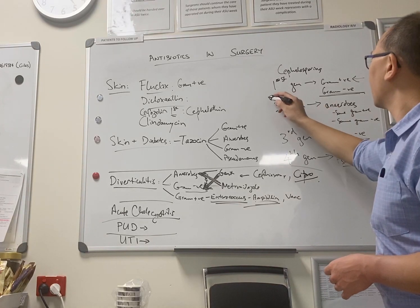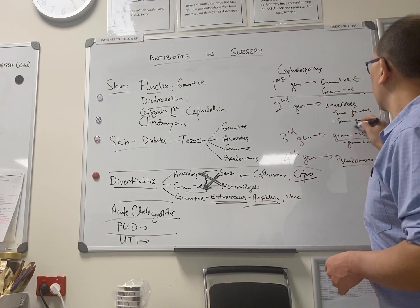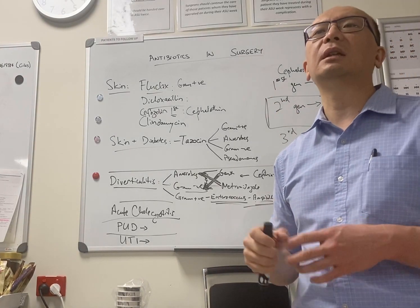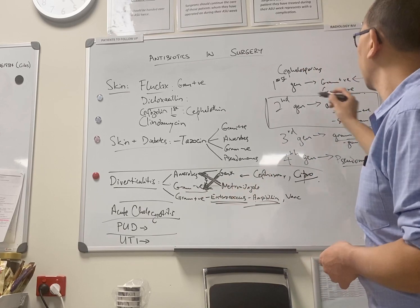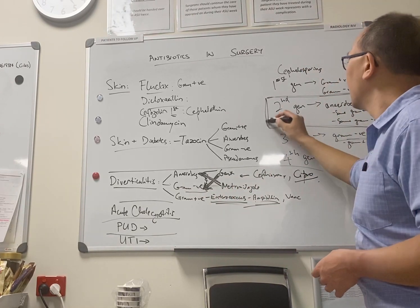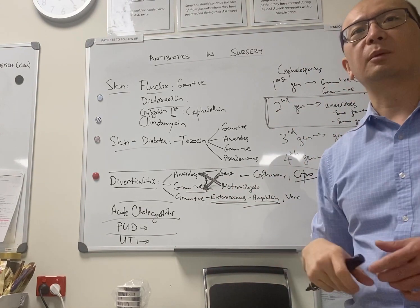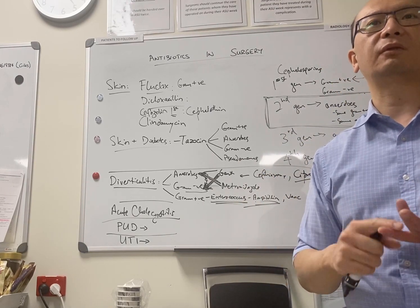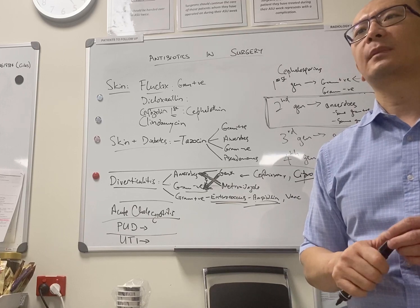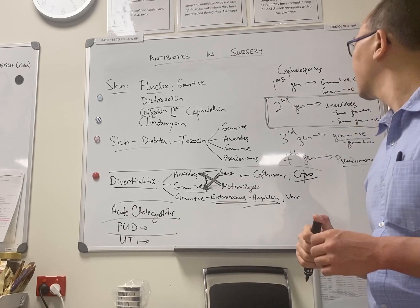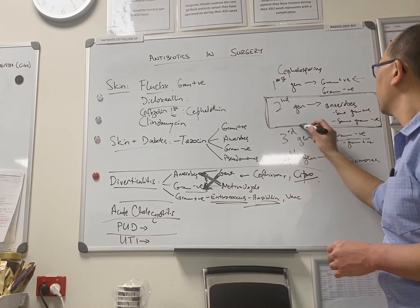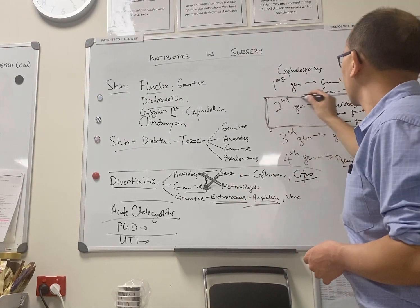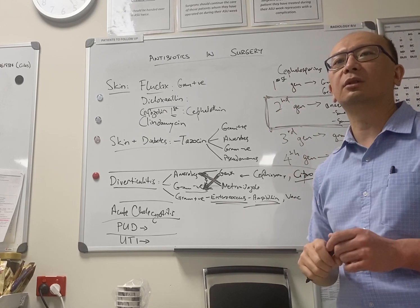The good thing about second-generation cephalosporins is that they have a reasonable anaerobic cover. And in hospitals that have it, that's a perfectly reasonable option for prophylaxis in intra-abdominal surgery. And it's a single agent and you only have to give one agent. The nurses don't have to draw up Flagyl as well as a first-generation ceph. But we don't have it here, so we don't use it. But in hospitals that have it, that's where you use your second-generation for prophylaxis in intra-abdominal surgery.